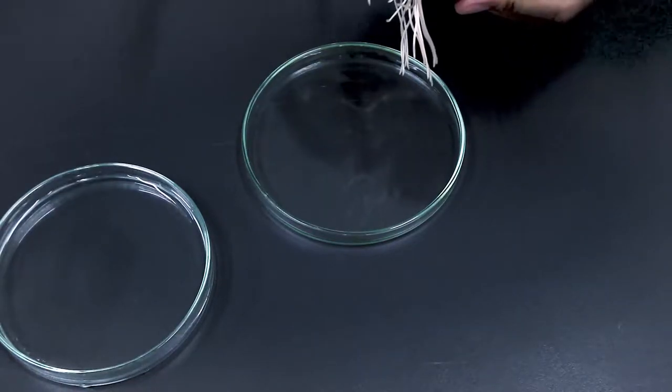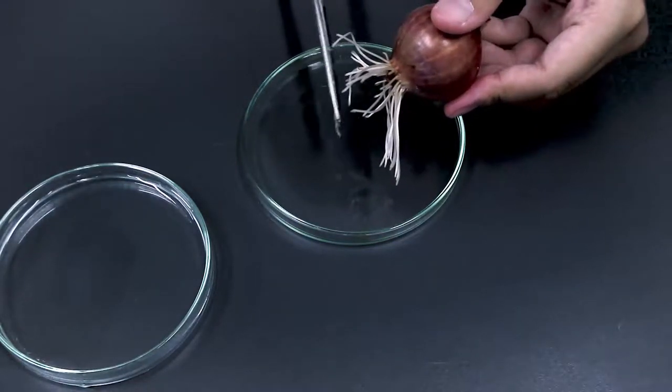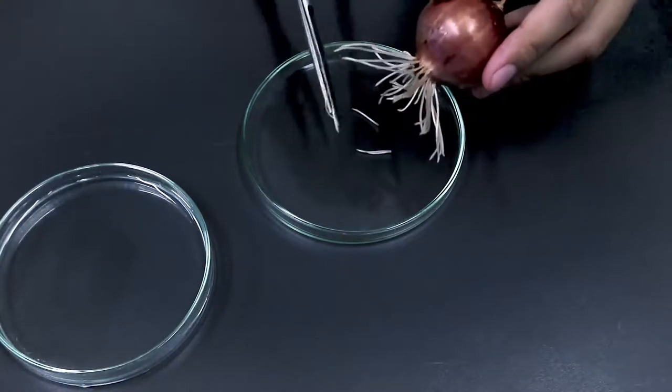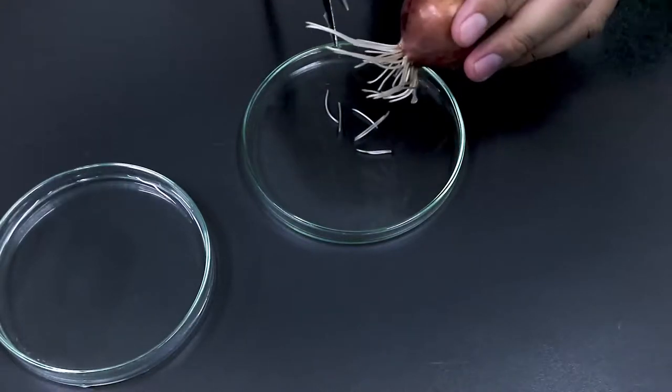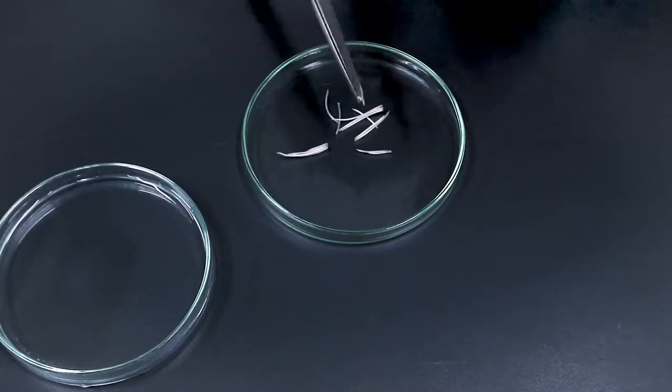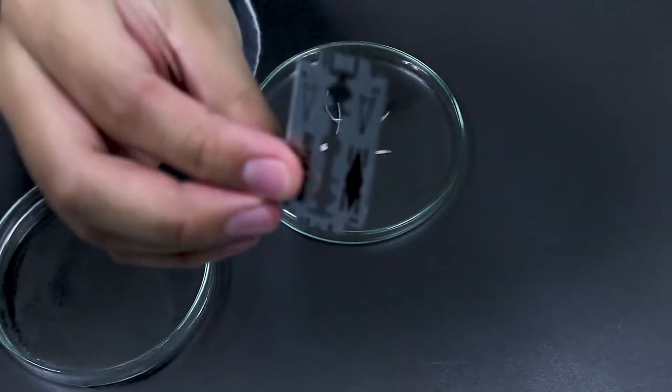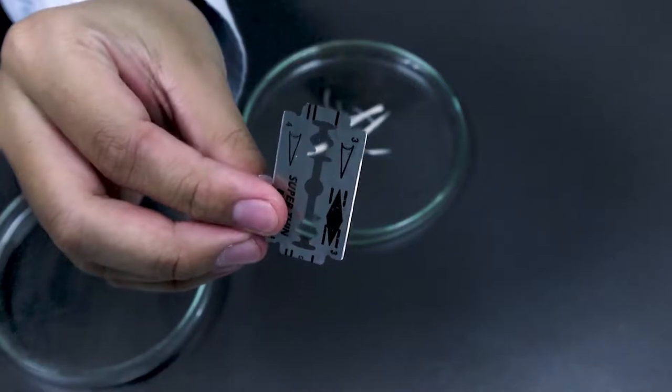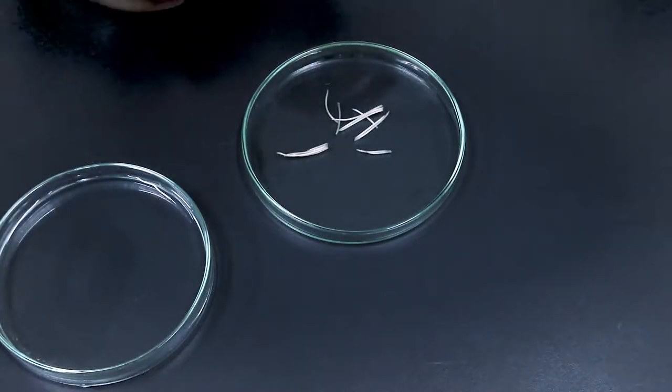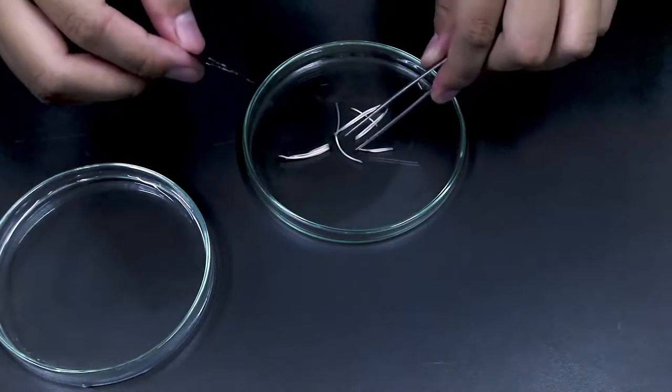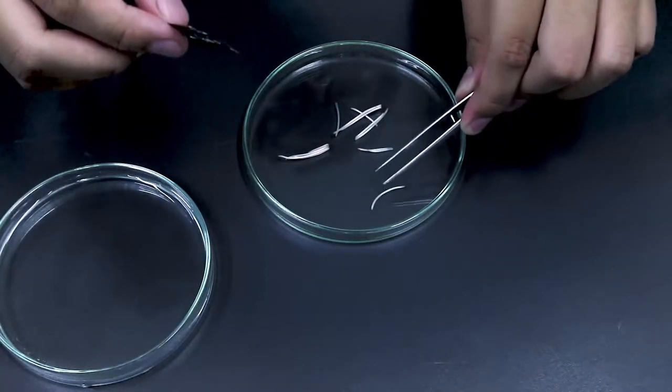You're going to get the root tips from here. Just cut them and place them in the petri dish like this. Be careful to use the correct side or the correct end of the root tips. You can use the razor blade to cut them because as you can see they are too long, so make them shorter. Just cut them.